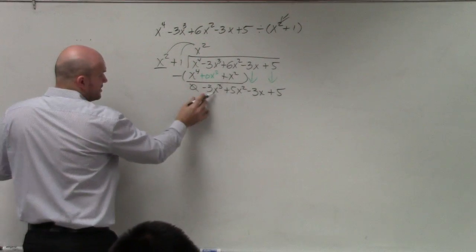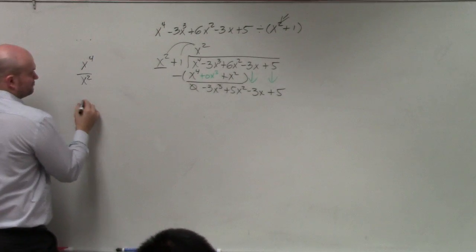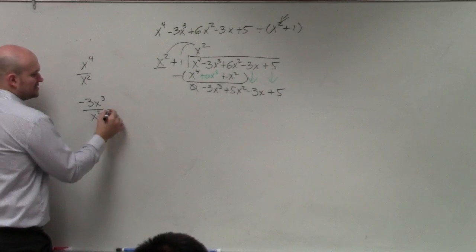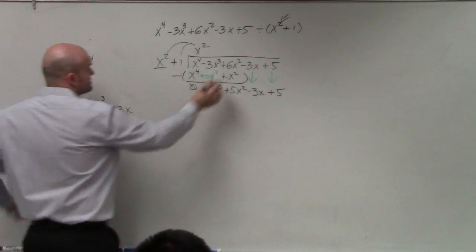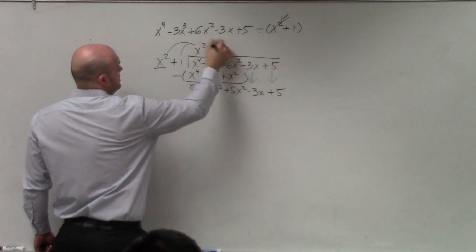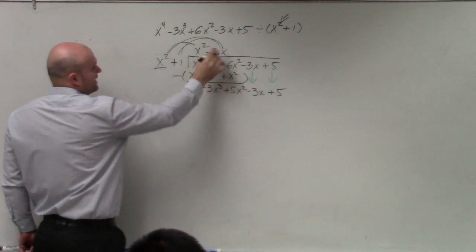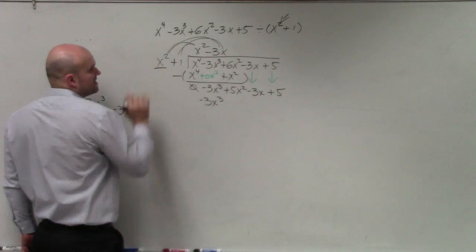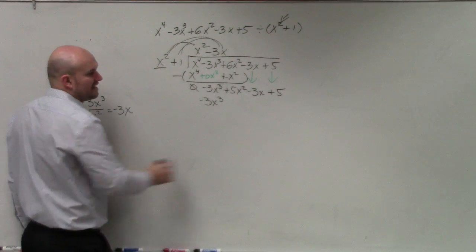How many times does x squared go into negative 3x cubed? So negative 3x cubed divided by x squared. Well, it goes into there negative 3x times. Multiply it by both terms again. Negative 3x times x squared is negative 3x cubed. Negative 3x times 1 is negative 3x.